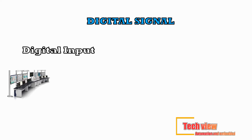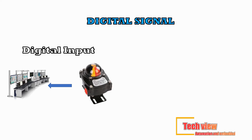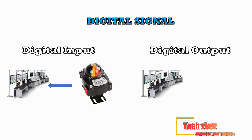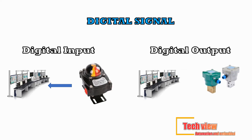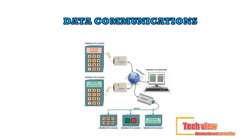A limit switch is an example of a discrete input device because at any given time it is either open or closed. It sends a discrete digital signal to a PLC; this signal can have one of only two values — 0 or 1 — indicating that the device is either off or on, respectively. A pilot light is an example of a discrete output device; it can only be on or off. A discrete output device receives a discrete digital signal from a PLC telling it to be in either one state or the other, and can never be in a state in between on and off.